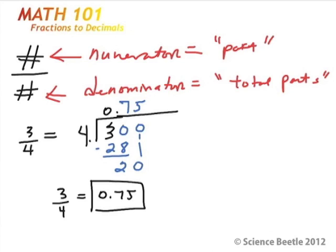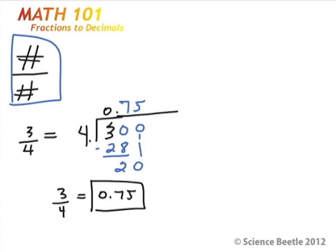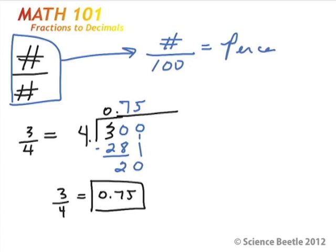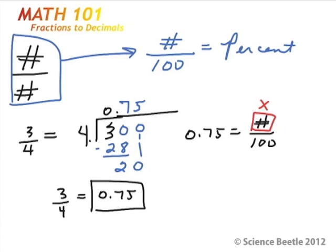Now what if we want to take this a step further and convert 0.75 into a percent? First, let me give you a definition. A percent is similar to a fraction, but it's the number you're interested in out of one hundred. So the percent equals some number divided by one hundred. This is actually the beginning of very basic algebra.